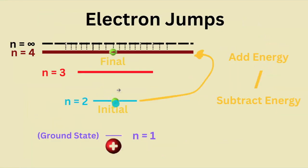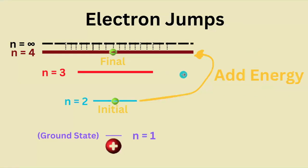So how would the n equals 2 electron jump to the n equals 4 state? Would we need to add energy or would we need to subtract energy? Well, we would need to add energy to the electron, right?